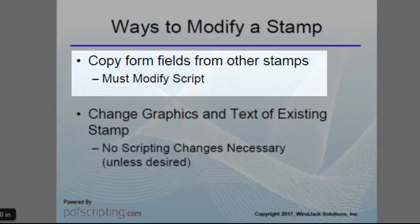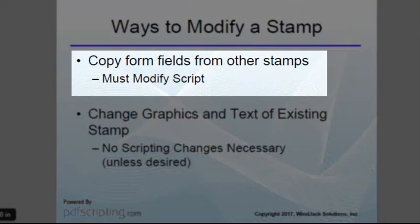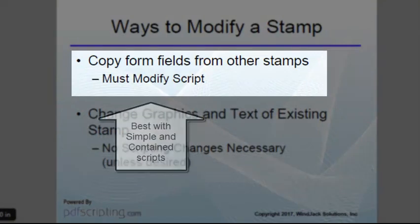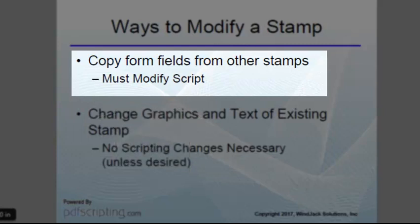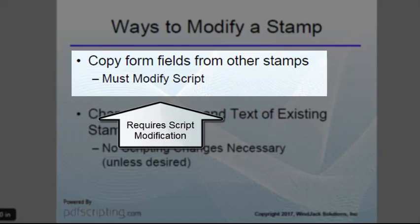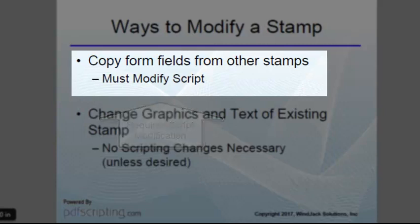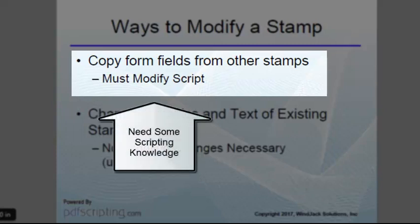One way is to copy the form fields from the found stamp into our own custom design. This particular method works great if all the functionality is contained in the form fields — meaning it's simple functionality — or you're copying functionality from multiple stamps into your own stamp. If you use this technique, you'll have to make modifications to the code, if for no other reason than because the stamp name will be different. Stamp names have to be unique and they have to match the script. You may also have to make other modifications to get all the scripts to work together. This is a more advanced technique.